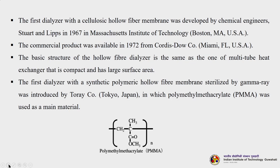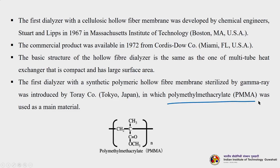The first dialyser with a cellulose hollow fibre membrane was developed by chemical engineers Stewart and Leibs in 1967 at MIT in Boston. The commercial product was available in 1972 from Cordis Dow Company in Miami. The basic structure of the hollow fibre dialyser is the same as a multi-tube heat exchanger — compact with a large surface area. The first dialyser with a synthetic polymeric hollow fibre membrane sterilized by gamma ray was introduced by Toray Corporation in Japan, using polymethyl methacrylate (PMMA) as the main material.